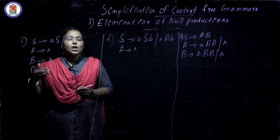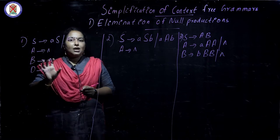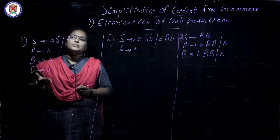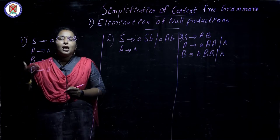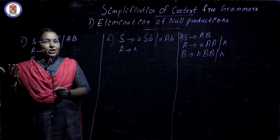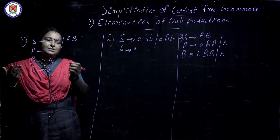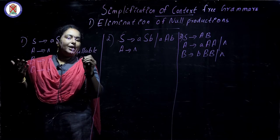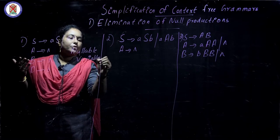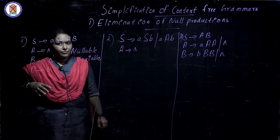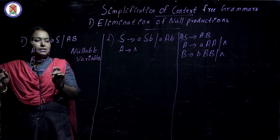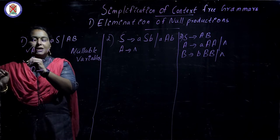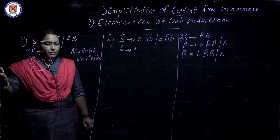The first step is the elimination of null productions. If a production contains null, it can be eliminated because null means nothing — so why waste the computer's resources storing a null production? It is a useless variable with no significance. Any variable that produces null is called a nullable variable.